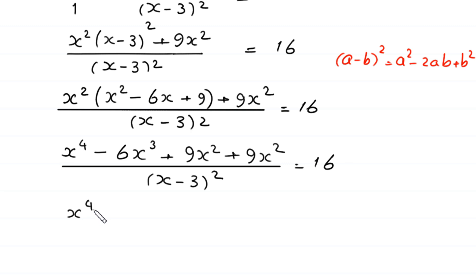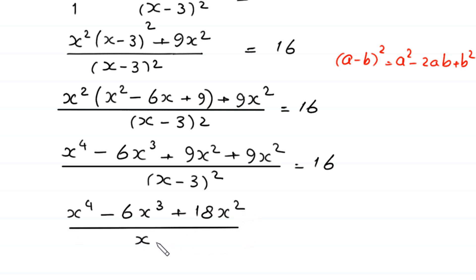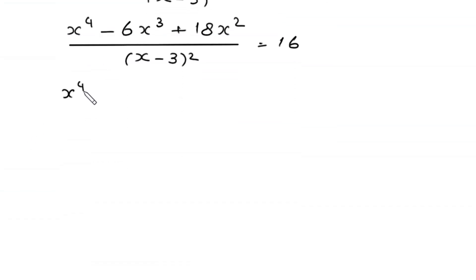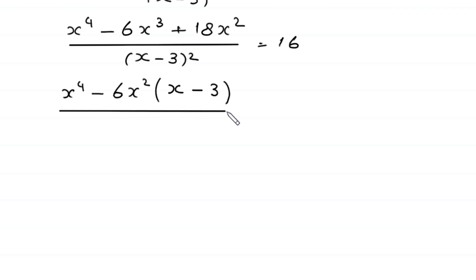Multiplying x² by (x² - 6x + 9): x² · x² = x⁴, x² · (−6x) = −6x³, and x² · 9 = 9x². The 9x² terms combine to give +18x². So we have x⁴ - 6x³ + 18x² divided by (x - 3)² is equal to 16. From the terms −6x³ + 18x², we can factor out −6x², leaving (x - 3).